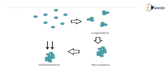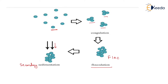Suspended impurities will be there; when we add a chemical, charge neutralization will occur. When charge neutralization happens, in the flocculation step all the particles will come in contact with each other and floc formation will take place. When we send it to the secondary sedimentation process, the flocs will settle down due to their self weight at the bottom of the tank, and water will be free from that type of impurity. That is the whole procedure of sedimentation aided with coagulation and flocculation.